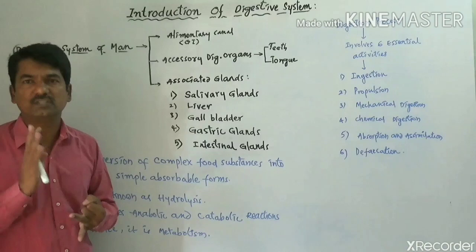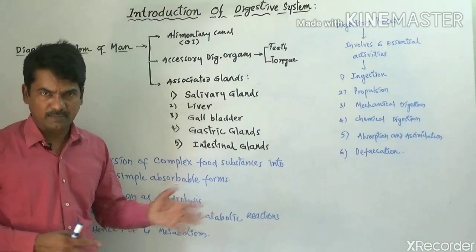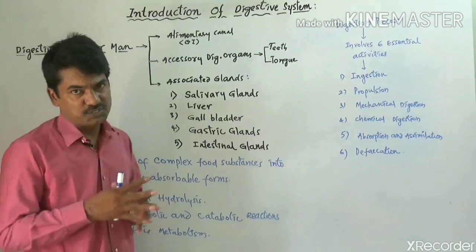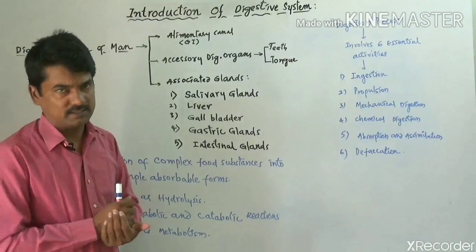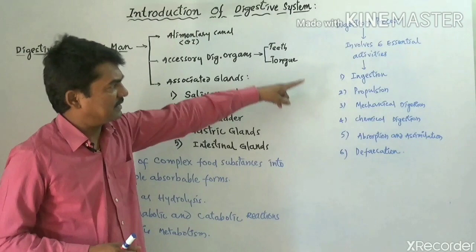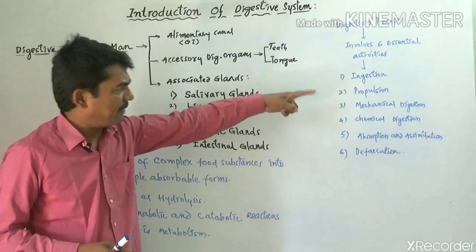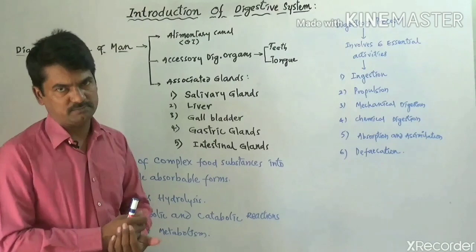Digestion includes anabolic process and catabolic process related reactions. Together, the anabolic process and catabolic process are called metabolism. The digestion process involves six essential activities: ingestion, propulsion, mechanical digestion, chemical digestion, absorption, assimilation, and defecation.